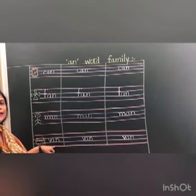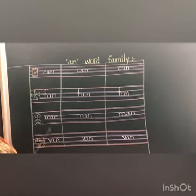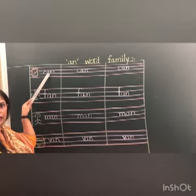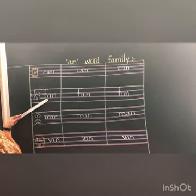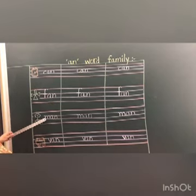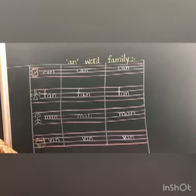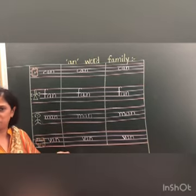V says /v/, A says /a/, N says /n/ — V-A-N, van. Let's read all the words. Can — C says /k/, A says /a/, N says /n/, C-A-N, can. Fan — F-A-N, fan. Man — M-A-N, man. Van — V-A-N, van. So children, which word family have you learned today? The -AN word family!